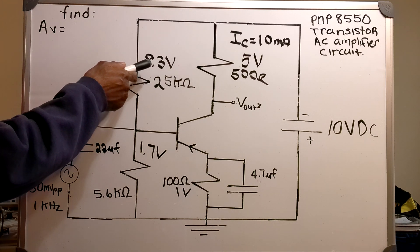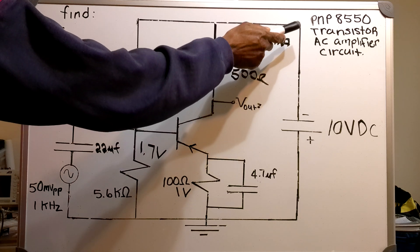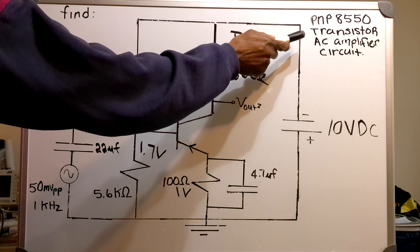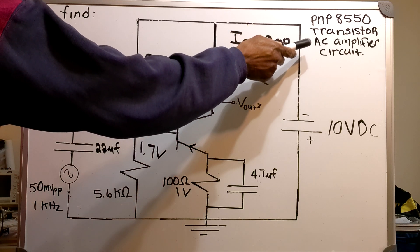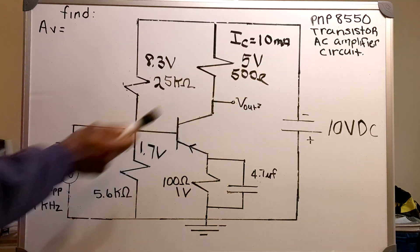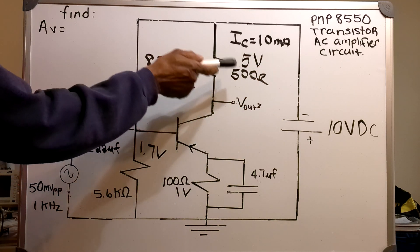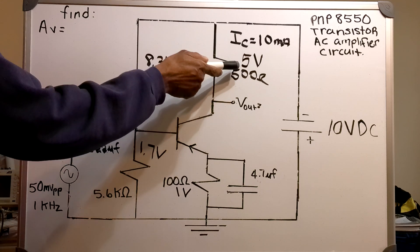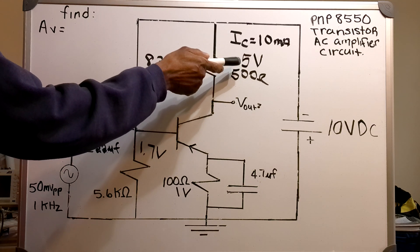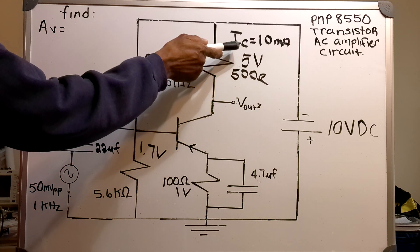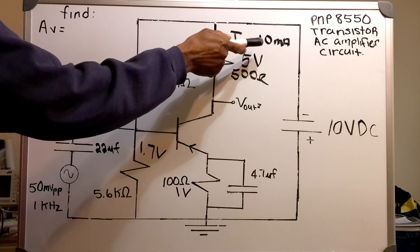Now, in this video, I've got the PNP8550 transistor AC amplifier circuit. On the collector side, I've got a 500 ohm resistor, 5 volts, a current of 10 milliamps.